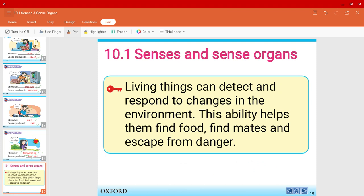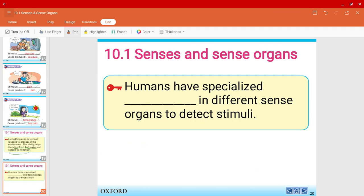So to wrap up, living things can detect and respond to changes in the environment. This ability helps them to find food, find mates, and escape from danger. Humans have specialized sensory cells in different sense organs to detect stimuli.